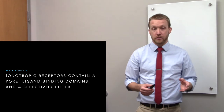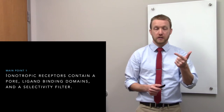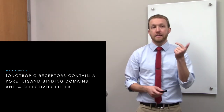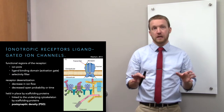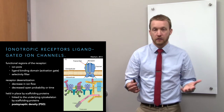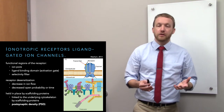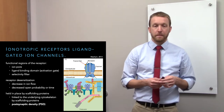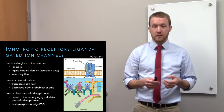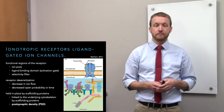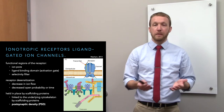For ionotropic receptors to function properly, they need a pore for ions to move through, a ligand binding domain as their activation gate, and a selectivity filter. Without an ion pore, there is no ion movement, no current, and no effect. The selectivity filter determines which ions move through, and different receptors have different selectivity filters, making them either excitatory or inhibitory. Different ligand binding domains cause them to bind different neurotransmitters.